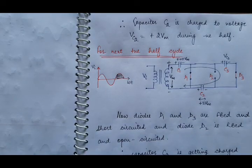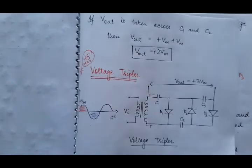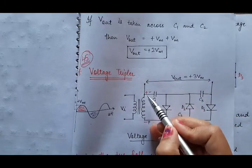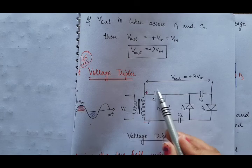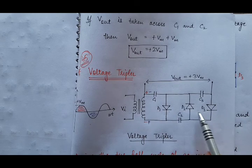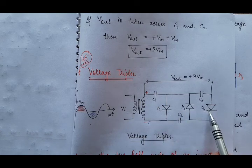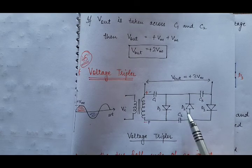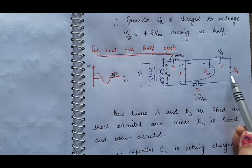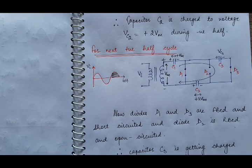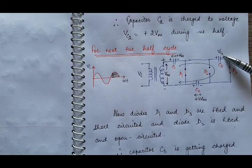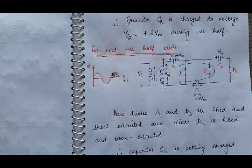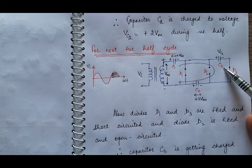During the next positive half cycle, again the upper end of the secondary coil becomes positively charged and the lower end becomes negatively charged. This makes diode D1 forward biased, diode D2 reverse biased, and diode D3 forward biased. So again D1 and D3 will be short-circuited and D2 will be open-circuited. In this second positive half cycle, capacitor C3 starts charging through diode D3. Let VC3 be the voltage across C3 and we need to find the peak voltage at the end of this positive half.